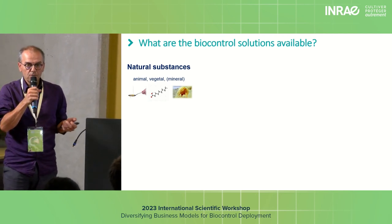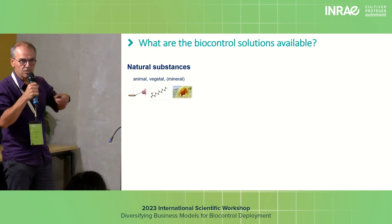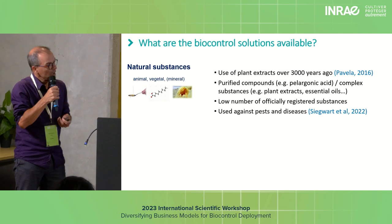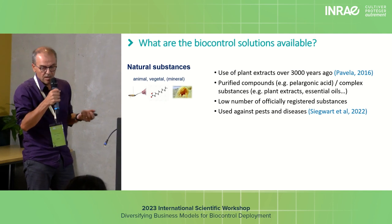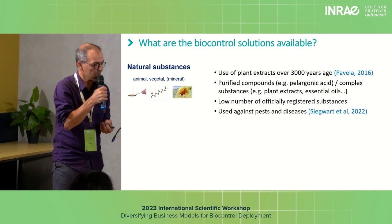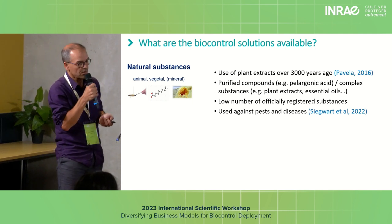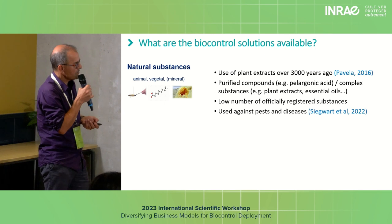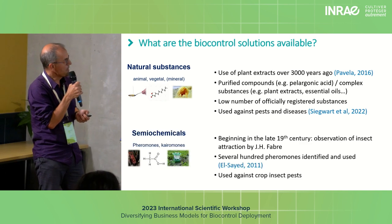Other substances that can be used as an augmentative strategy are natural substances, because they are applied throughout the growing season. Use of plant extracts dates back 3,000 years ago. There are either purified compounds, like pelargonic acid used as a bioherbicide, or complex substances like plant extracts or essential oils. At present, there are a low number of officially registered substances, and these are used against either pests or disease.